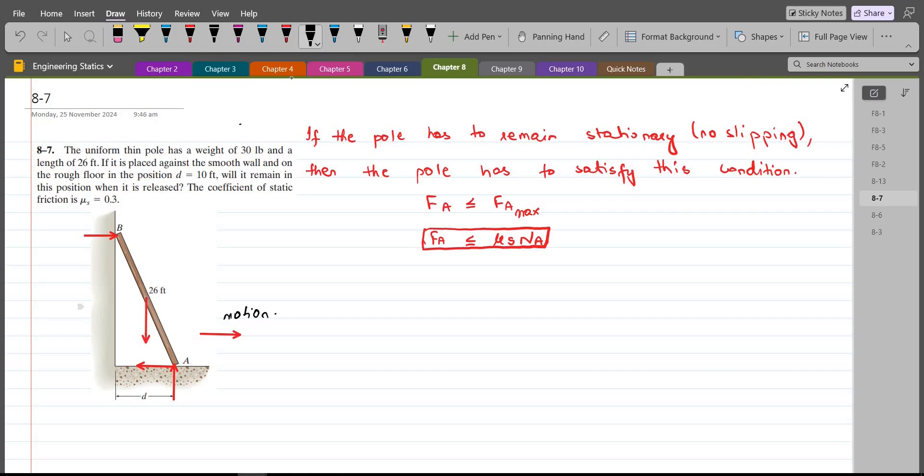Now, let's label each of the forces. So, this right here is Nb. Let's call this Na. And this is our frictional force from the floor, let's call this Fa. And this right here is the 30 lb force.